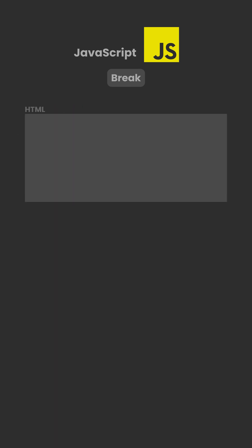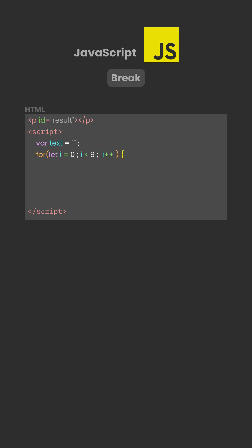In the example, a for loop starts counting from 0 up to 9. Inside the loop, there is a condition that checks if i equals 3. When this condition becomes true, the break statement runs. At that moment, the loop stops completely.